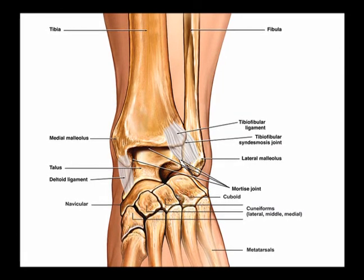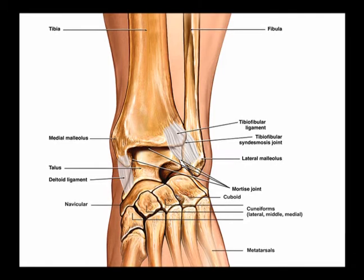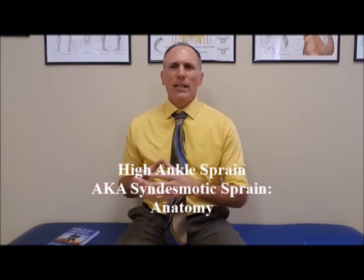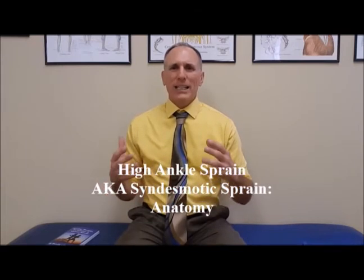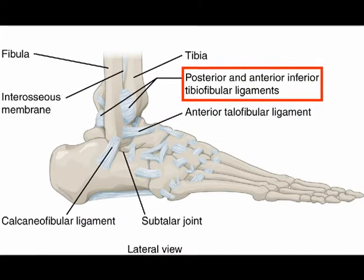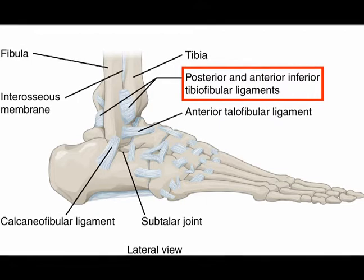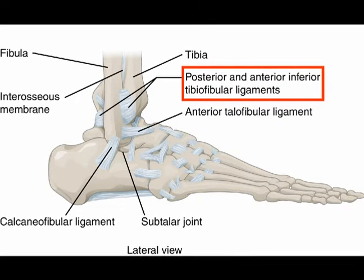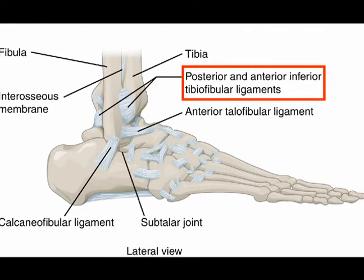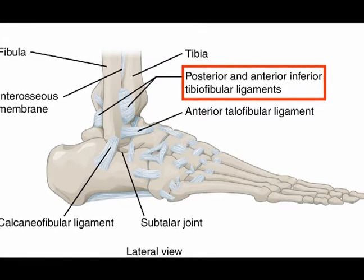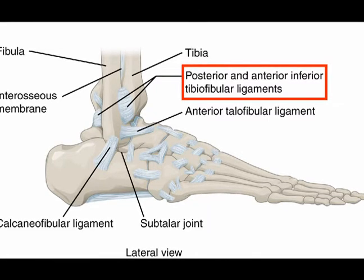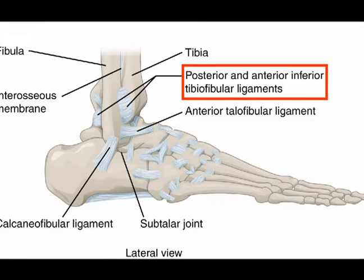The syndesmotic sprain makes up about 10% of ankle sprains — so the lateral ankle sprain is about 80%, medial is 10%, and high ankle is 10%. The high ankle sprain has a long recovery period. These ligaments are weight-bearing ligaments connecting two larger bones together and don't have a great blood supply, so they require a longer recovery. Extra attention and care must be taken when returning to activity after a high ankle sprain.